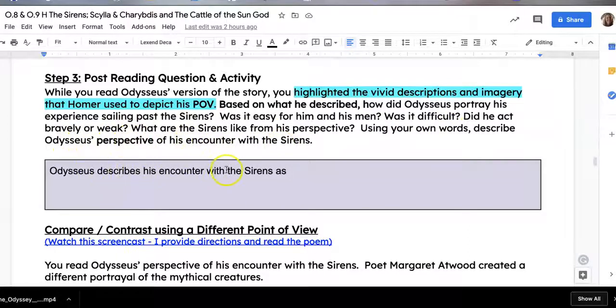You can change these words a little bit if you want, but basically you can start with something like, 'Odysseus describes his encounter with the Sirens as,' and then you'll answer that question. So describe what that encounter was like for him from his point of view.